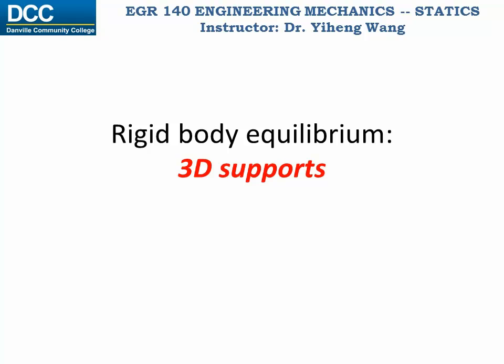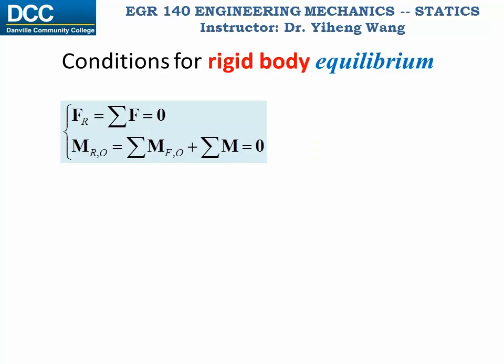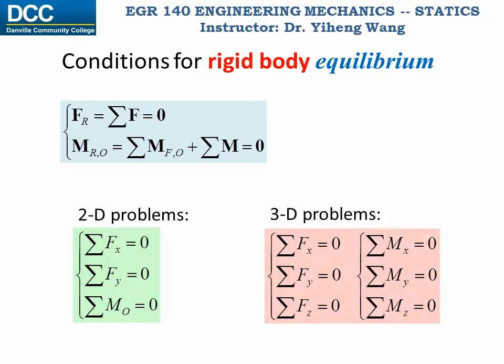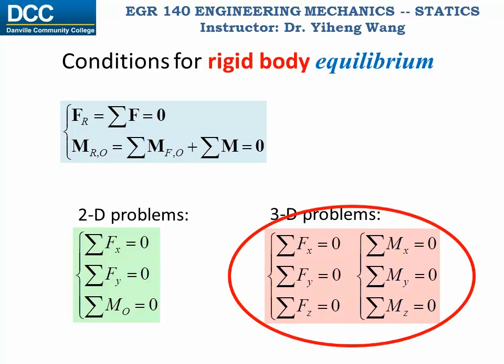Let's first review the conditions for rigid body equilibrium. For a rigid body to be in equilibrium, there are two vector equations that need to be satisfied: the resultant force acting on the body needs to be zero, and the resultant moment summarized about any point needs to be zero as well. We can also write scalar equations instead. For 2D problems, there are a maximum of three scalar equations enabling us to solve for three unknowns, and for 3D problems, there are a maximum of six scalar equations enabling us to solve for six unknowns.